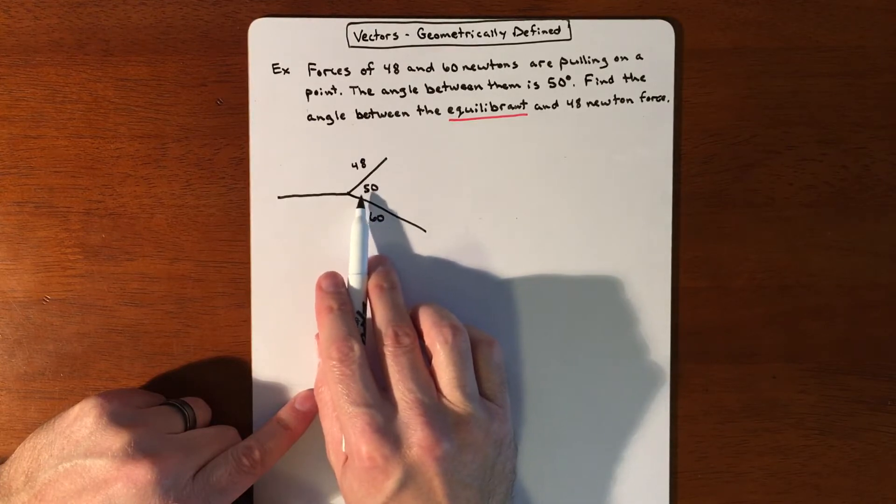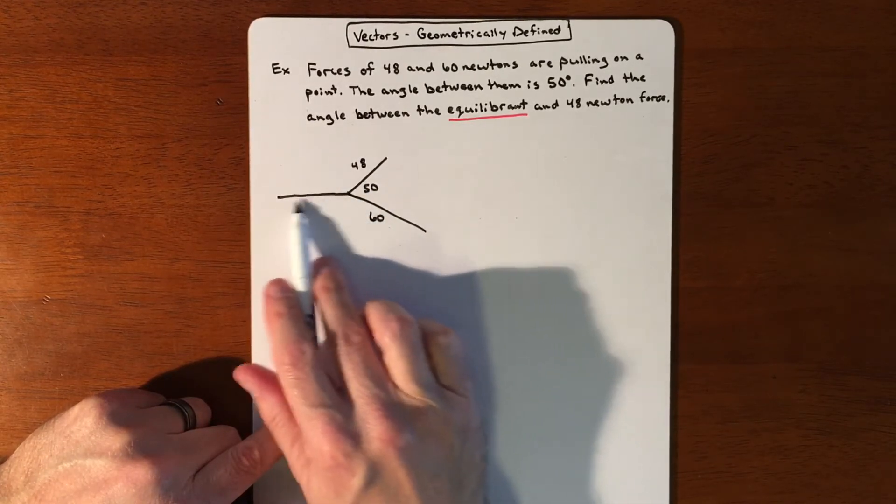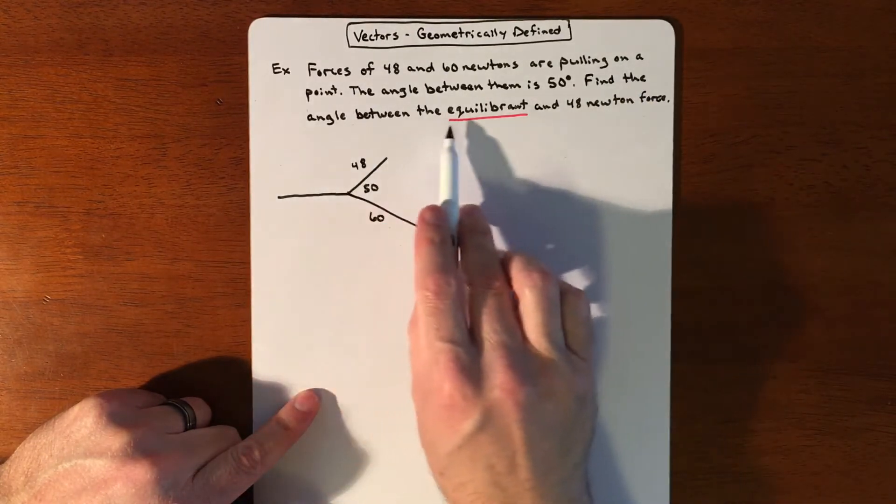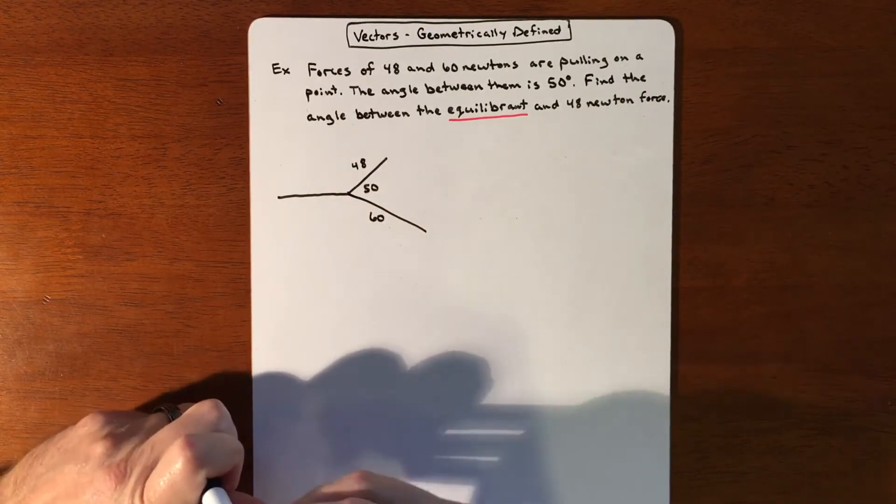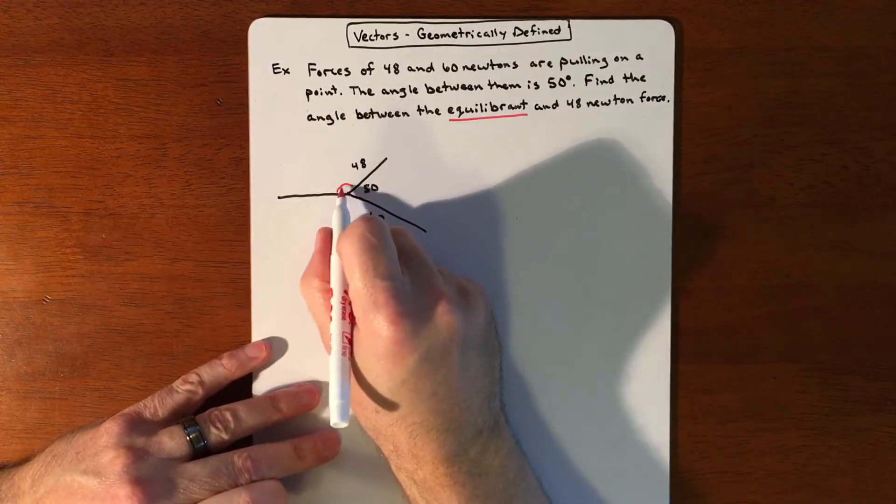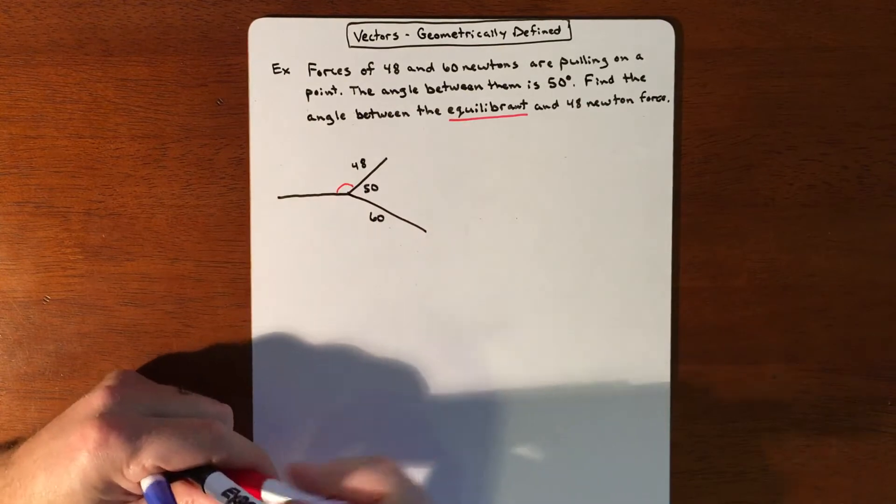So there's some physics and everything involved in that, but that's kind of what we're looking for. And it says find the angle between. So we're actually looking for this angle right here. That's going to be the end key that we're looking for.